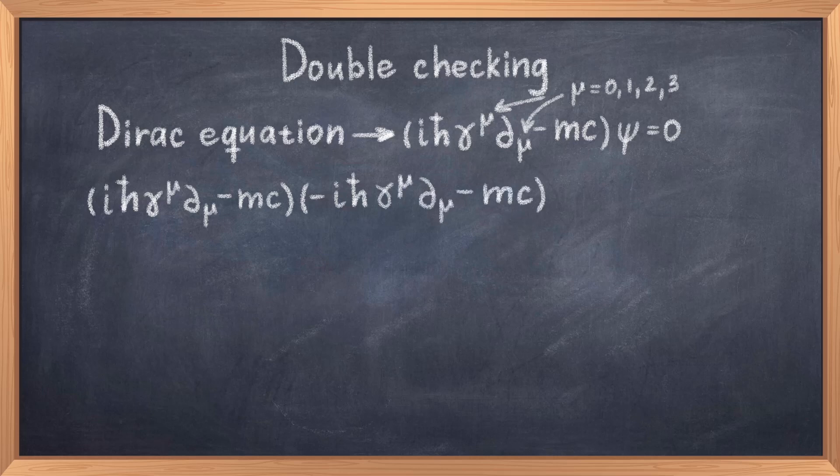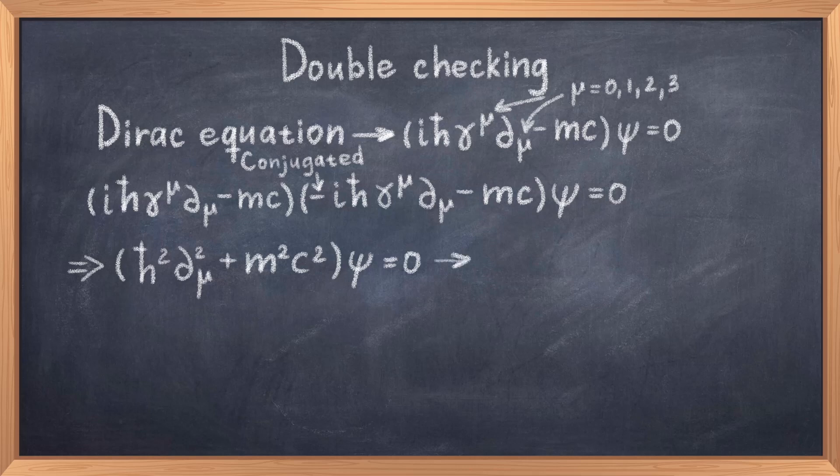Now the last thing we need to do is to check that we didn't do any mistakes on the way. Recall that the Dirac equation should be the square root of the Klein-Gordon equation, so let us now square it. Because this equation is complex, this means that we must multiply it with the complex conjugate. This means that the sign in front of the imaginary number i change and we obtain, in parenthesis, i h-bar gamma mu partial differential mu minus mc, times in parenthesis,